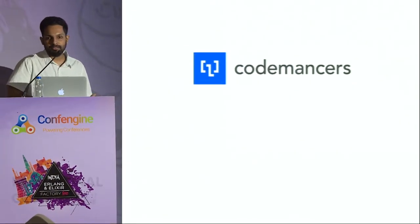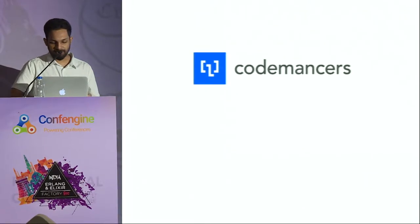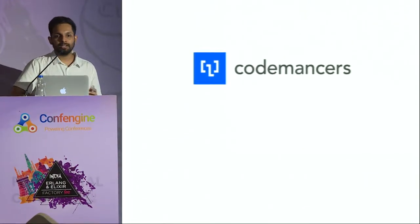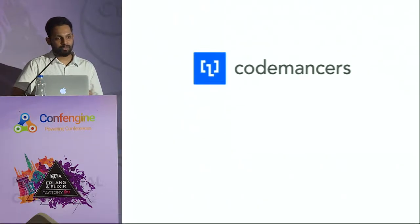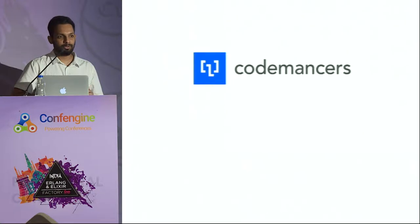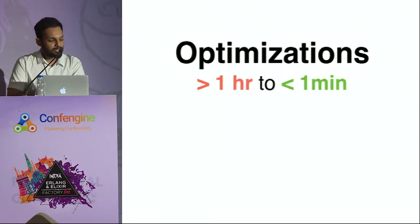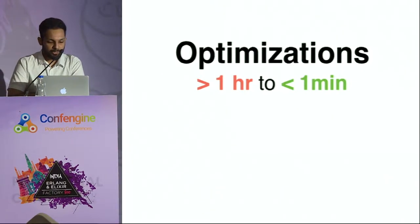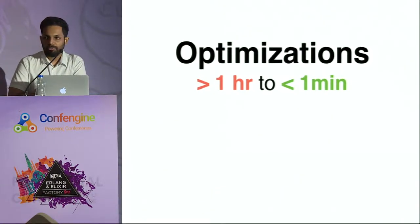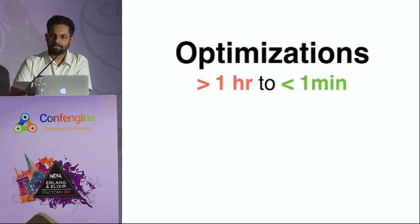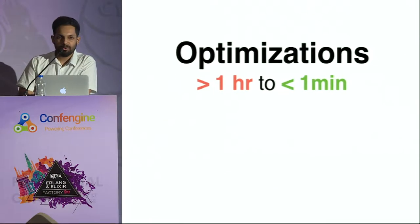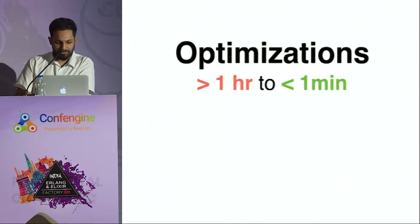I work with a small team of developers at Codemancers, where we build web applications for our clients. This talk is based on my recent experience working on a soft real-time system that we built completely with Elixir. We're going to look at some of the performance optimizations that brought down the execution time of a critical part of the system from a little more than one hour to a few seconds.